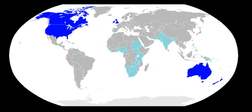Modern English has case forms in pronouns — he, him, his — and a few verb endings — I have, he has — but Old English had case endings in nouns as well, and verbs had more person and number endings. The translation of Matthew 8:20 from 1000 CE shows examples of case endings: nominative plural, accusative plural, genitive singular, and a verb ending.